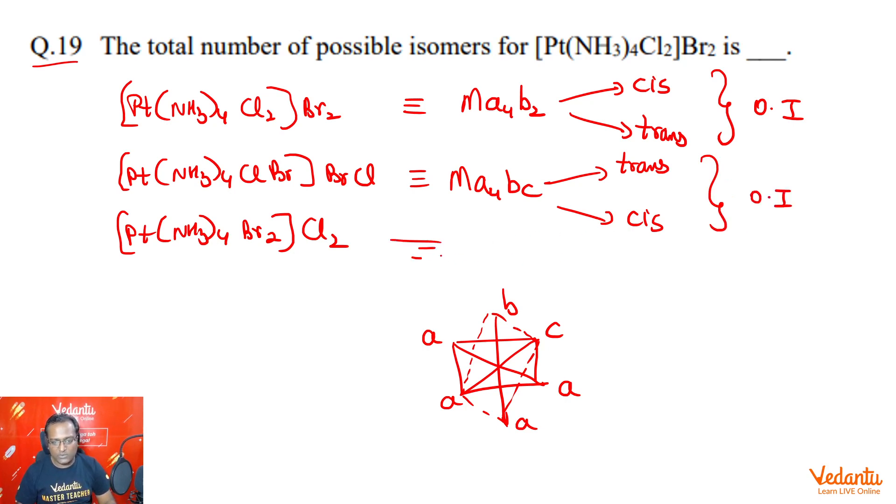Next one is MA4B2, but a different B2. This will again show cis and trans geometrical isomerism and both the geometrical isomers will be optically inactive. So therefore, we get three structural isomers. Each structural isomer showing two geometrical isomers, both optically inactive. So total number of isomers that we are getting here is six.